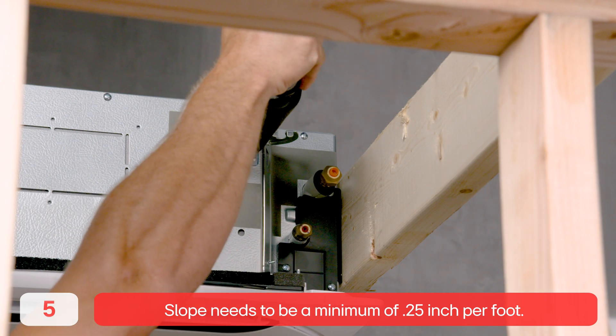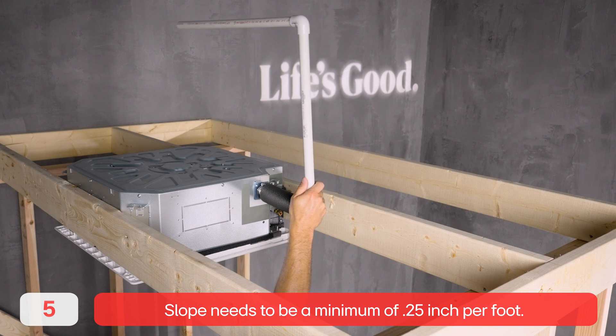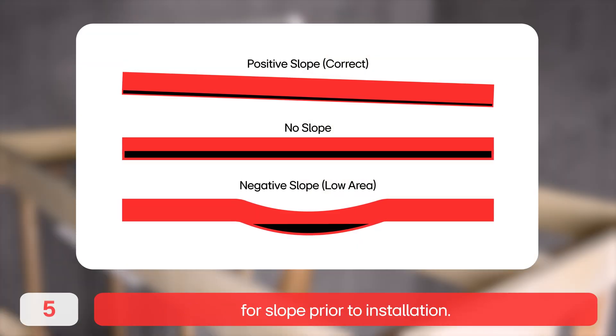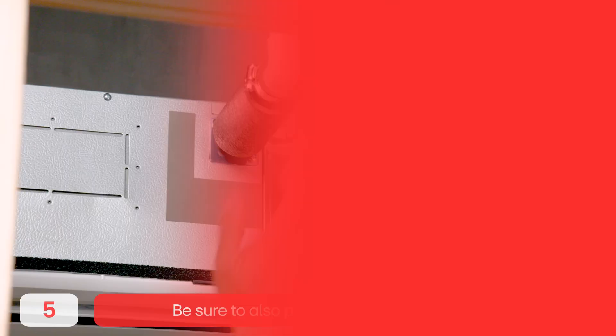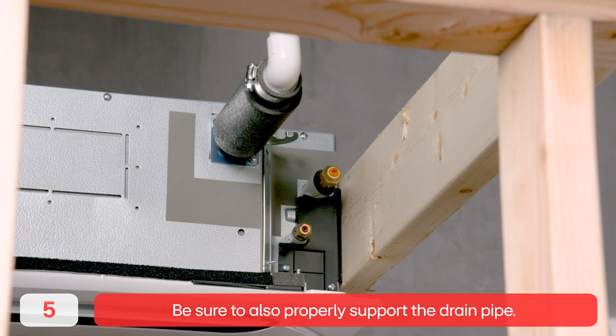Slope needs to be a minimum of 1/4 inch per foot, but you should also check the local and national requirements for slope prior to installation. Be sure to also properly support the drain pipe.